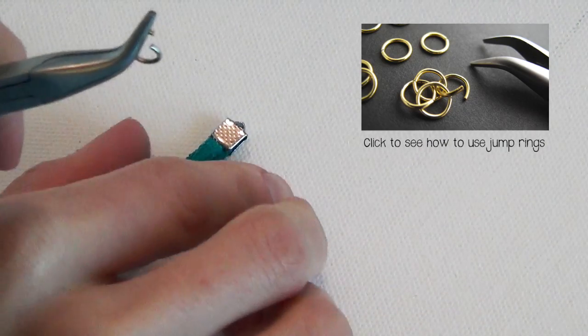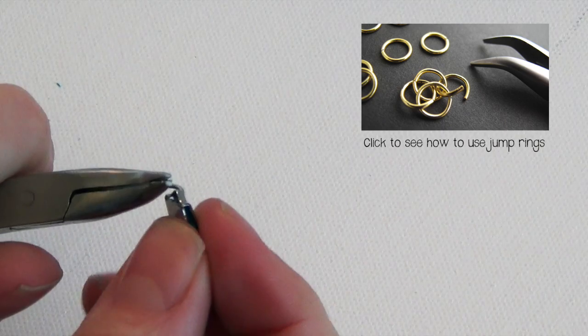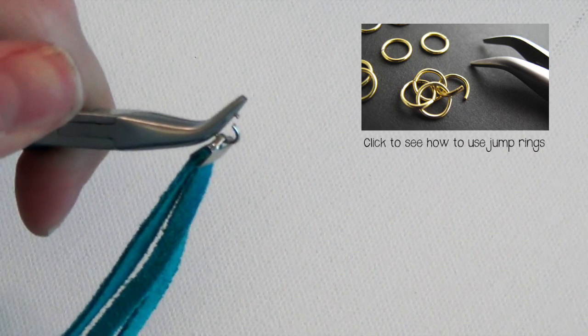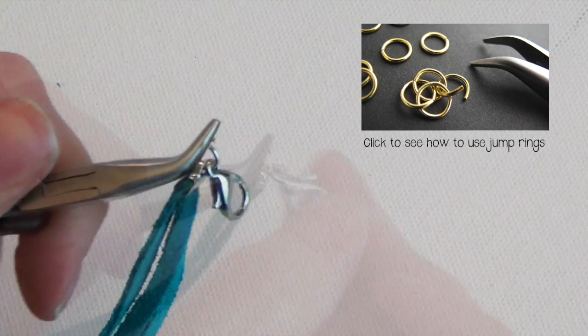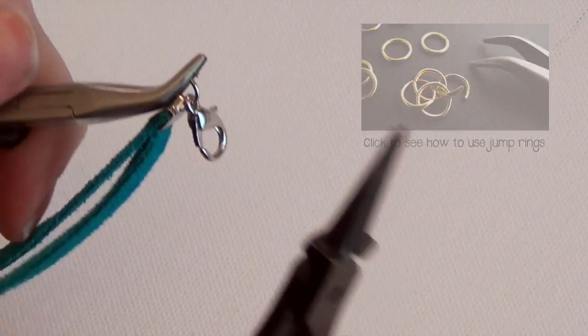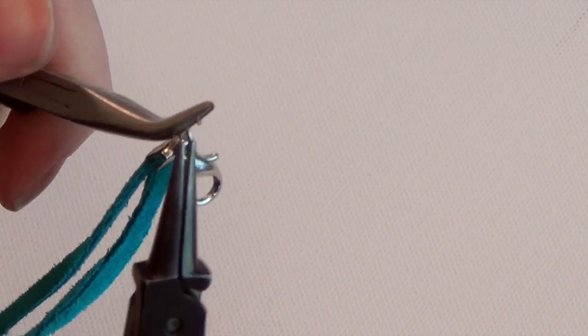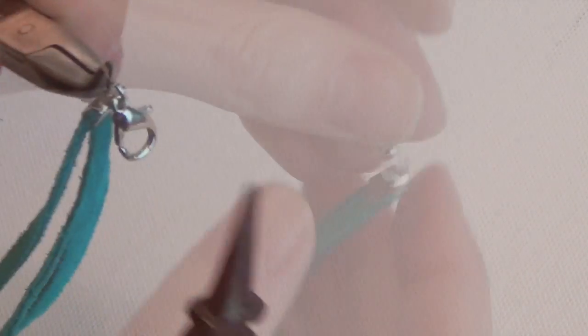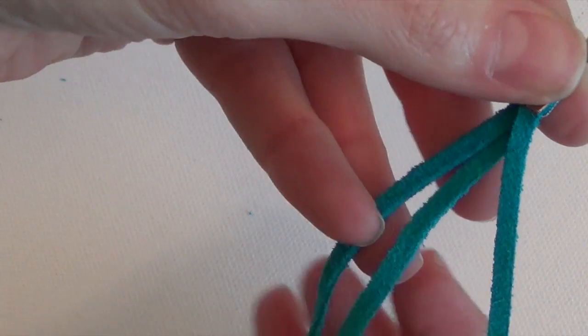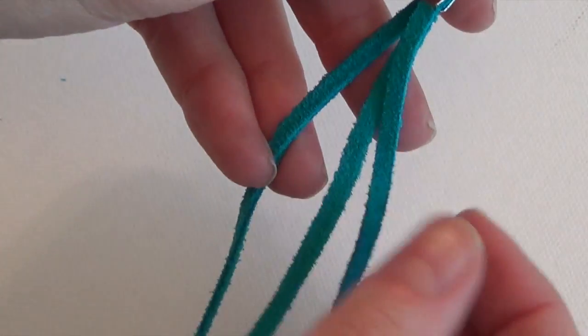And we're going to attach jump rings. If you've never used jump rings before and you'd like to know the proper way to do that, you can click here to see that video. I go into detail on using jump rings. After you slide on the clasp, you can close up the jump ring and then we're ready to get to braiding.